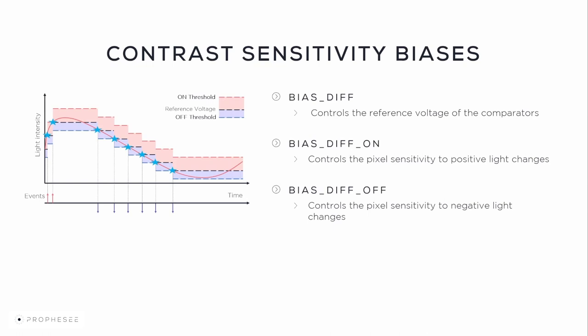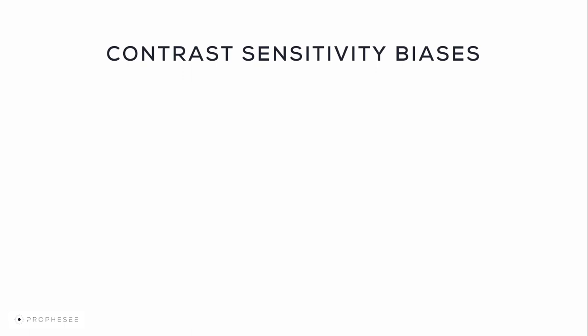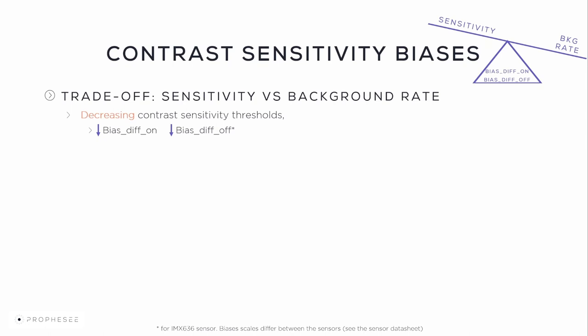Note that on the IMX636 sensor, all bias values are trimmed during a calibration procedure in the manufacturing process, and all default bias values are set to 0 in the MetaVision software. Adjusting bias diff on and bias diff off allows the sensor to be more or less sensitive to contrast changes. A high contrast can be detected with a large contrast sensitivity threshold, while a low contrast requires only a small threshold to be detected. When adjusting contrast sensitivity biases, you need to consider the trade-off between sensor sensitivity and the generated background rate. Decreasing your contrast sensitivity threshold means decreasing your bias diff on and bias diff off values for the IMX636 sensor. Note that the relation between thresholds and corresponding biases will differ between sensor generations.